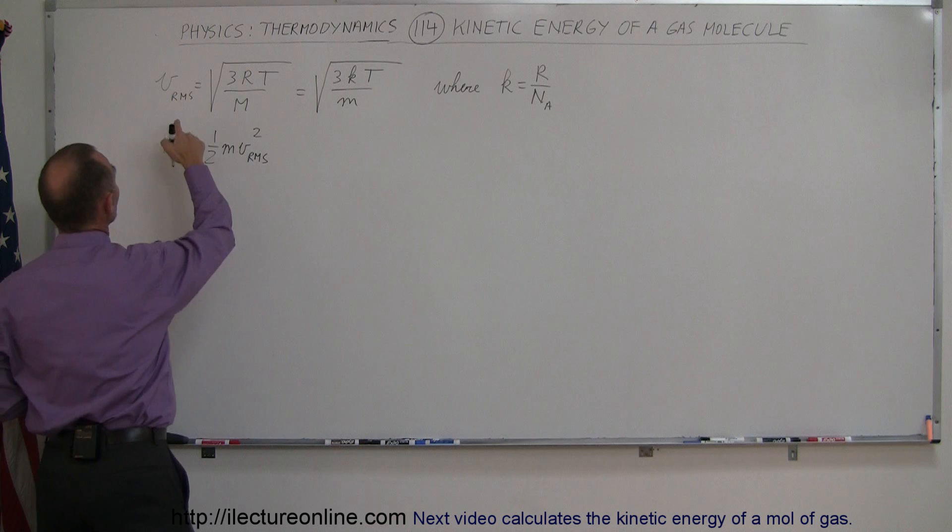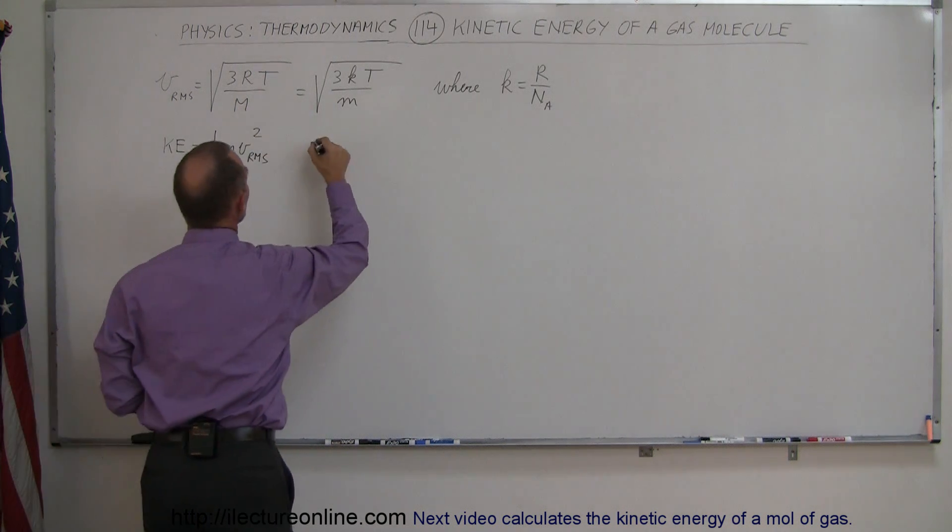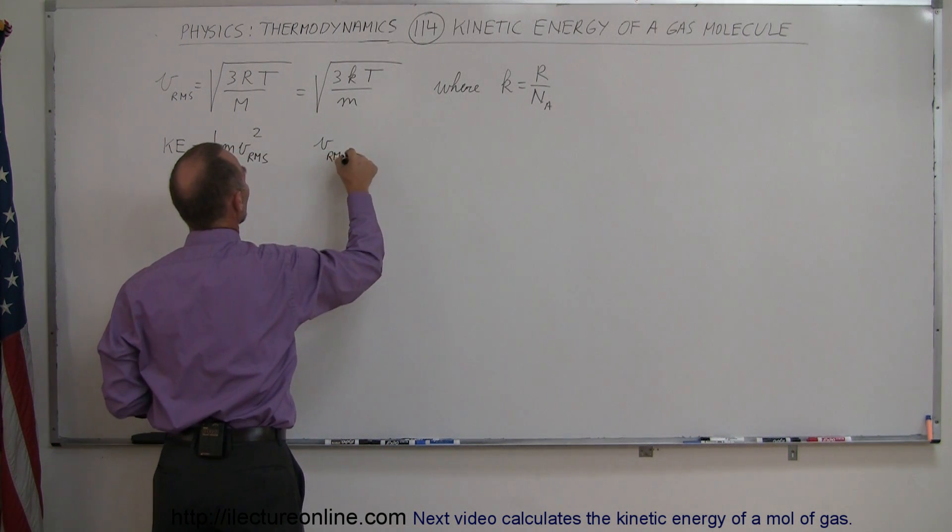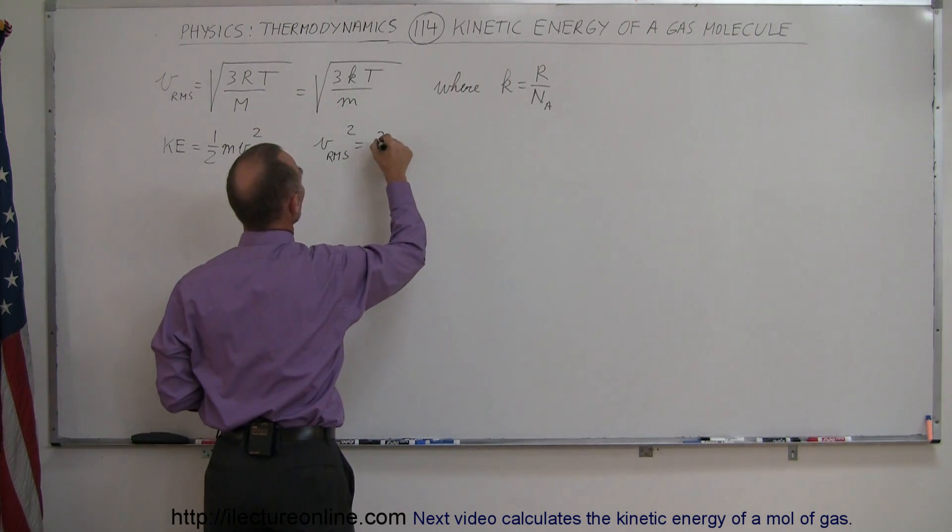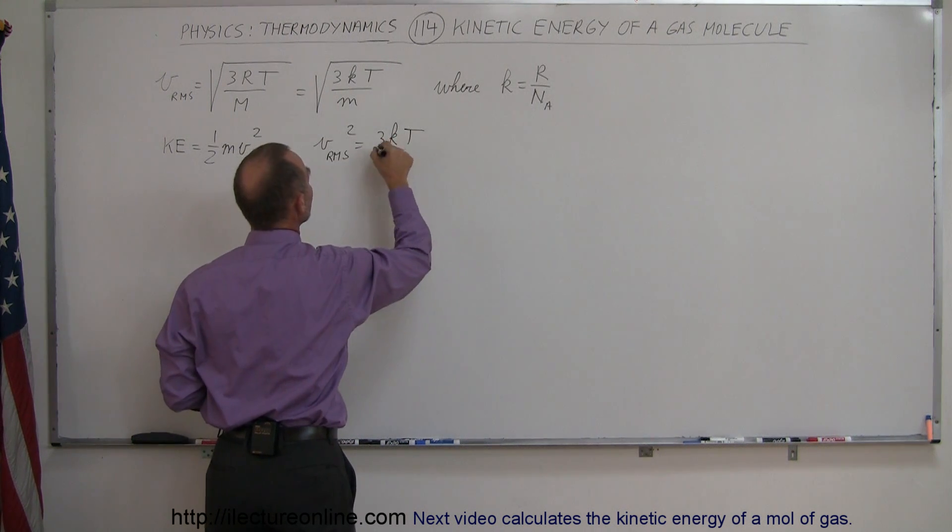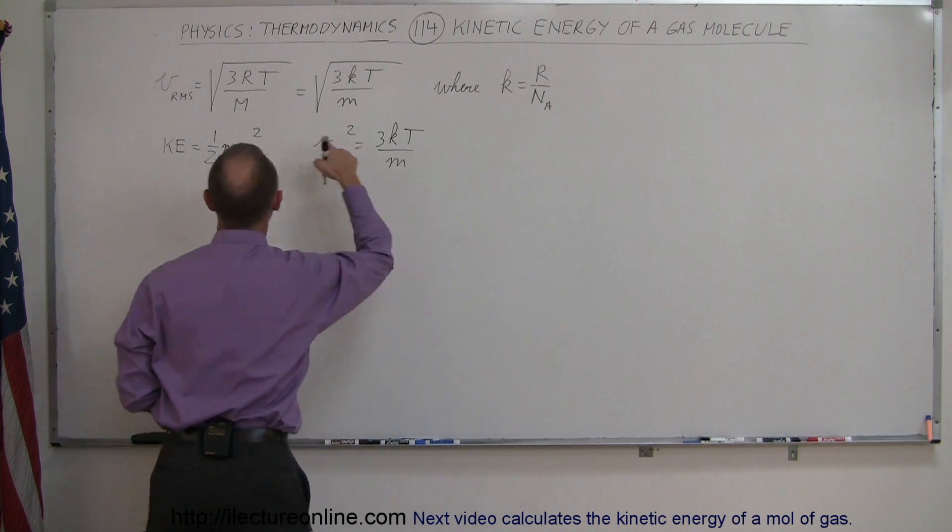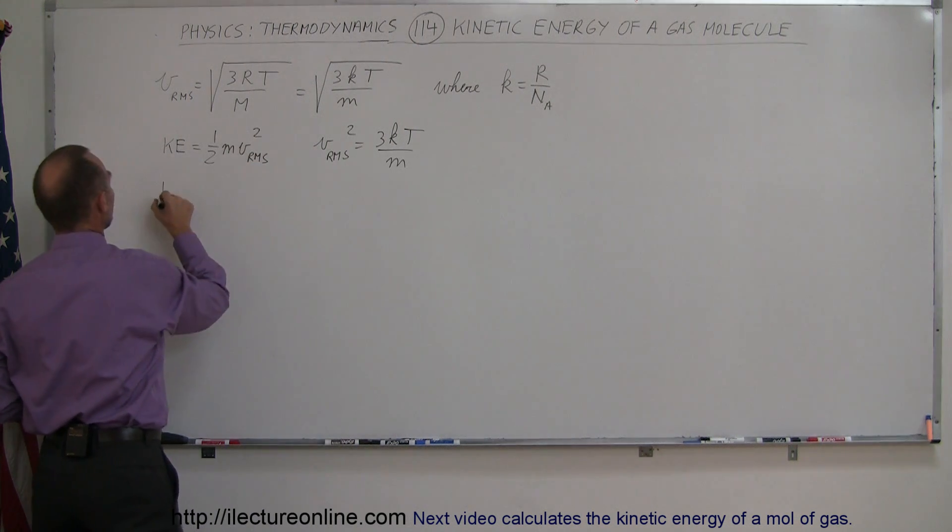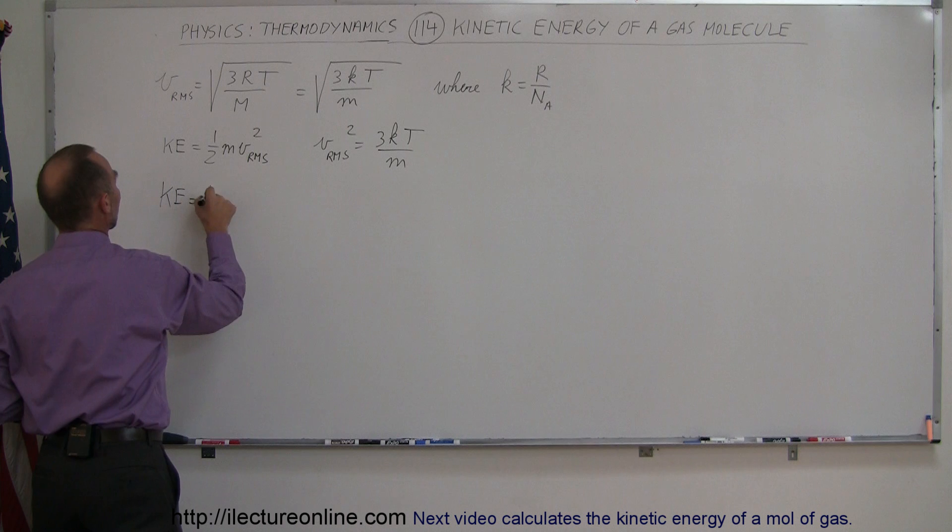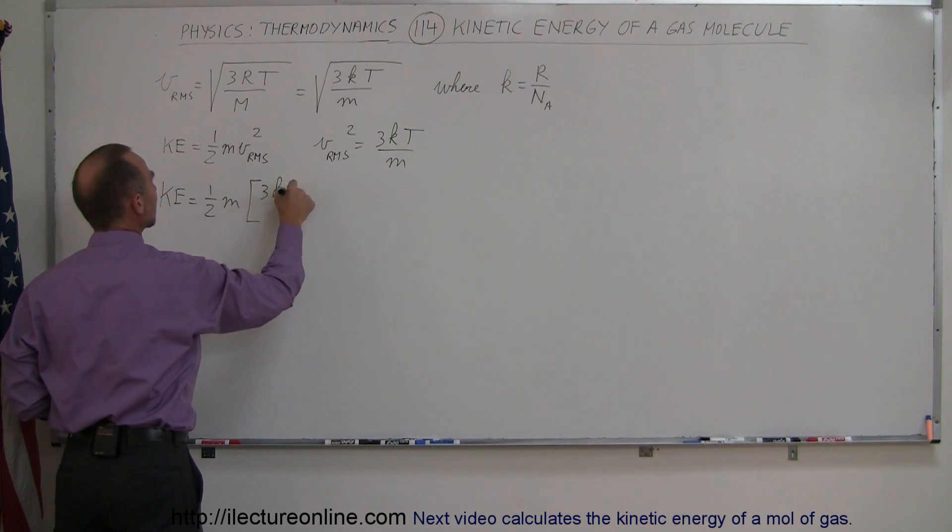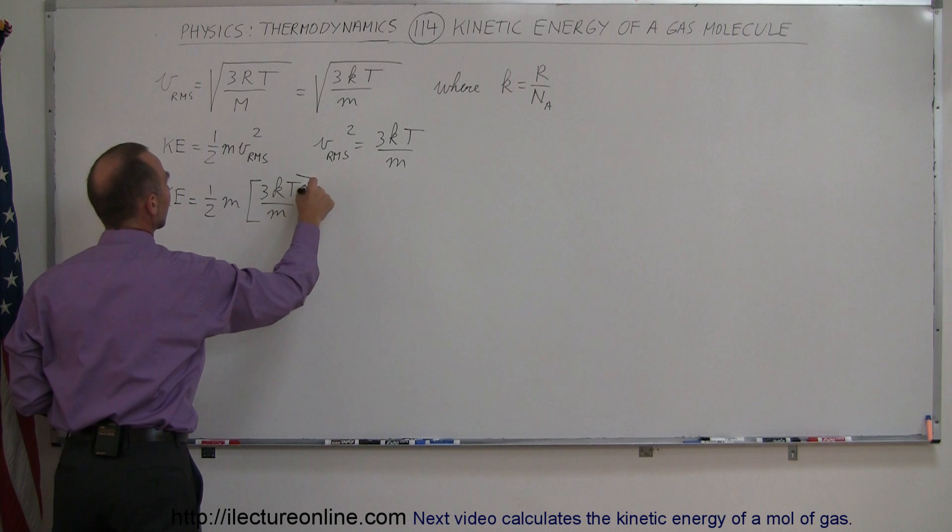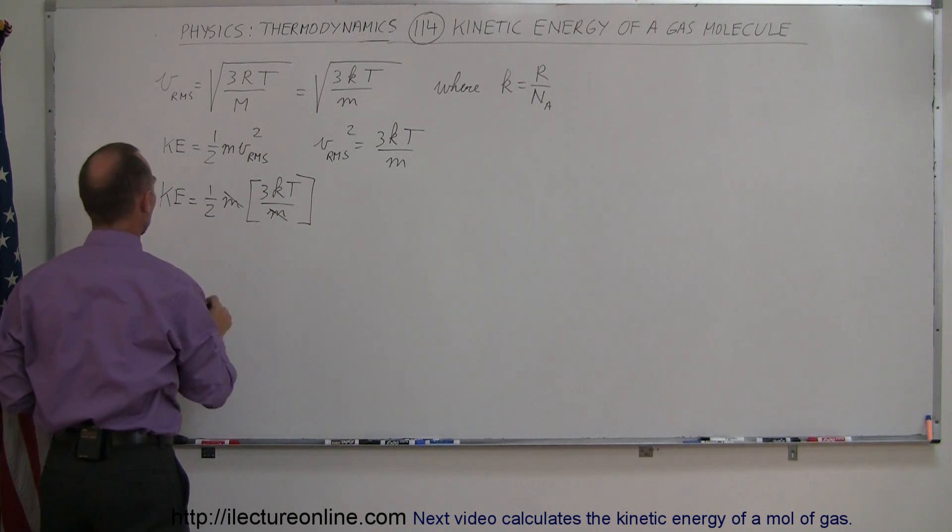Okay well since we know that V_RMS is equal to that, that means that V_RMS squared is equal to this with the radical removed because we square both sides. So this gives us 3KT over the mass and we'll plug that into our equation right here. So the kinetic energy is equal to one-half times the mass times 3KT over M, and then notice that the M's cancel out.